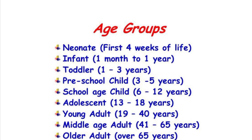School age group refers to school-going children. Next is the adolescent period — 13 to 18 years.